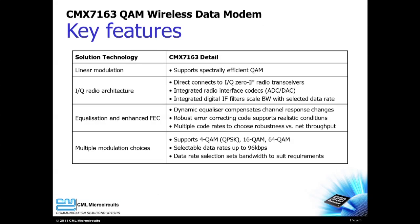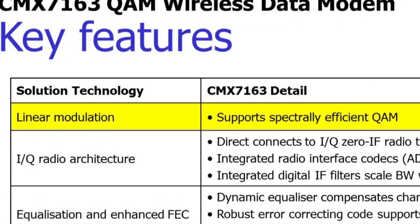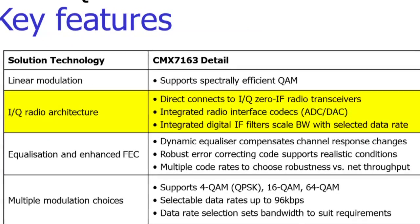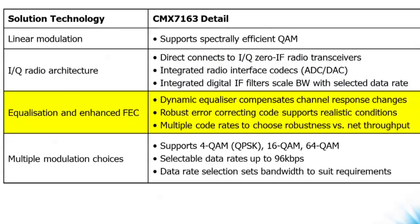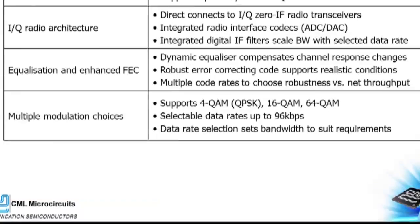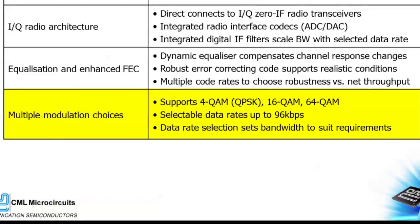The CMX7163 feature set greatly simplifies your product design. This allows your product to pass more data in a given RF channel. The integrated radio interface codec allows the CMX7163 to directly connect to IQ radio transceivers, and the integrated digital IF filter bandwidth scales with baud rate. Equalization and FEC allow robust data performance even in harsh signal environments. The wide variety of modulation types and data rates adds to the flexibility that the CMX7163 provides.